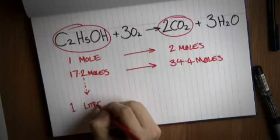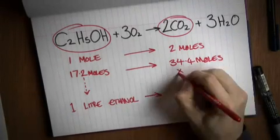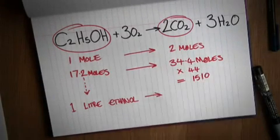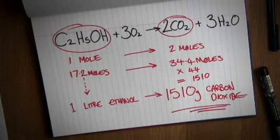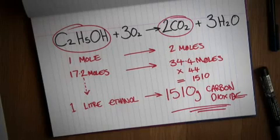And as carbon dioxide weighs 44 grams per mole, that's going to give you 1,510 grams of carbon dioxide. You could have done the same thing backwards to find out how much ethanol you'd need to burn to produce a certain amount of carbon dioxide. But carbon dioxide is a gas, so how can it weigh anything?